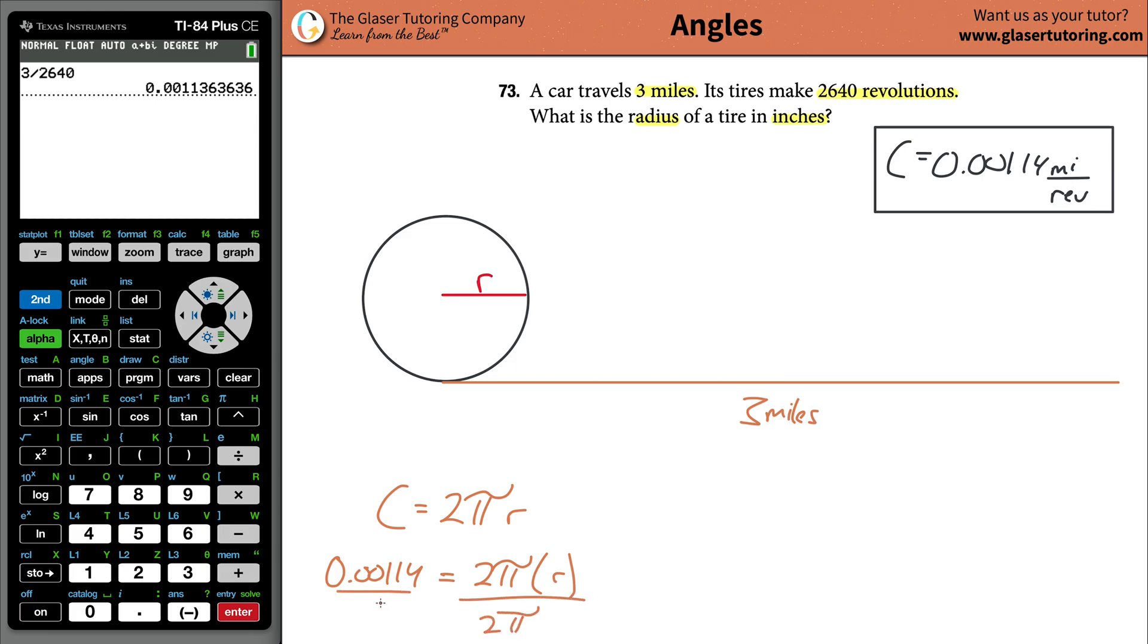To solve for r, just simply divide out the 2 pi from both sides. So your radius now will equal, go to the calculator, you want to take that prior answer and divide it by 2 times pi. So the radius now is going to be 1.8 times 10 to the minus 4th, and that's in miles.